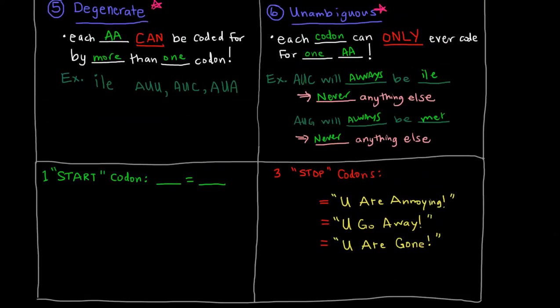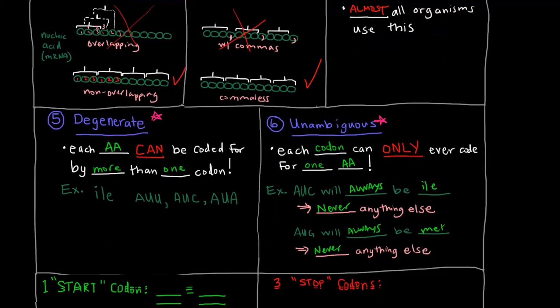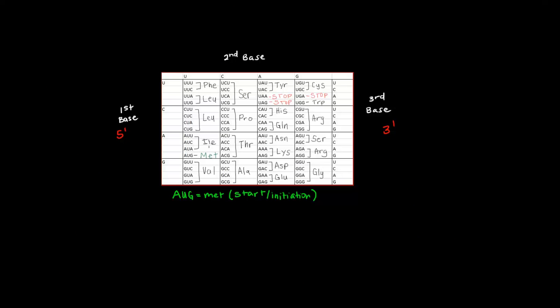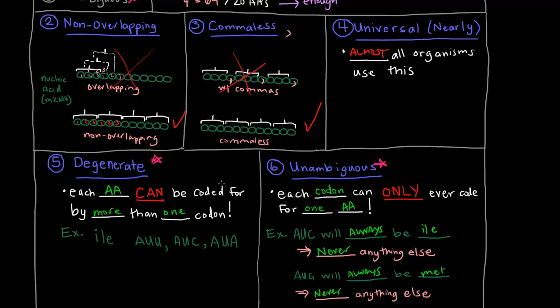But degeneracy, if I tell you that you have isoleucine, what's the codon? Isoleucine, well, you don't really know, right? It could be AUU, AUC, or AUA. That's the idea behind it being degenerate. So the code is degenerate, but unambiguous. If you know the codon, you know the amino acid. But just because you know the amino acid doesn't mean you necessarily know the codon. That's the idea between these two.